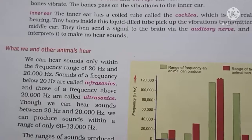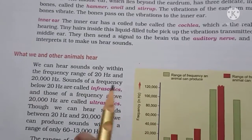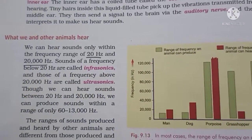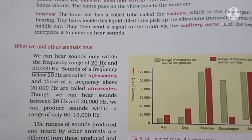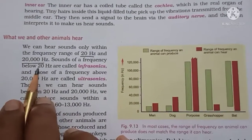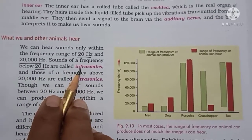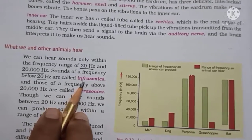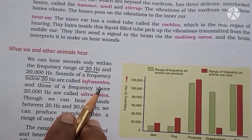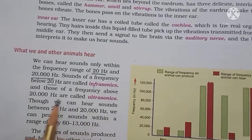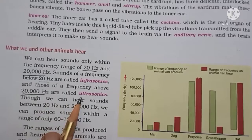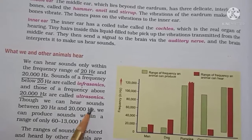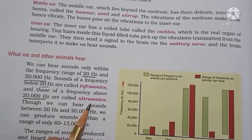Human beings can hear sound of frequency between 20 Hz and 20,000 Hz, and this is called the audible range. If the sound is of frequency less than 20 Hz, we call it infrasonic sound or infrasonic vibration, and these sounds cannot be heard by human beings. Those sounds of frequency more than 20,000 Hz are known as ultrasonic sound, and again human beings cannot hear ultrasonic sounds.